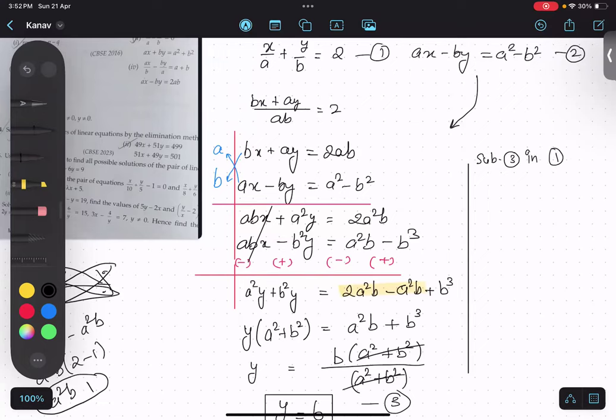So x upon a plus b upon b equals to 2. X upon a equals to 2 minus 1. X equals to a. Ok.